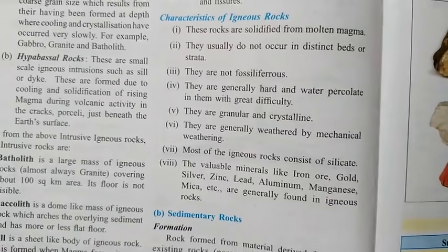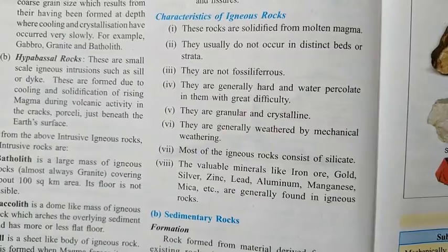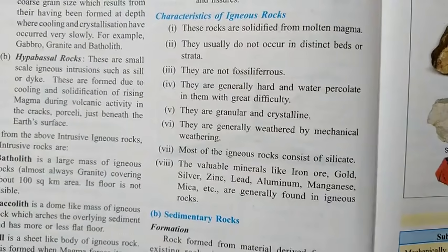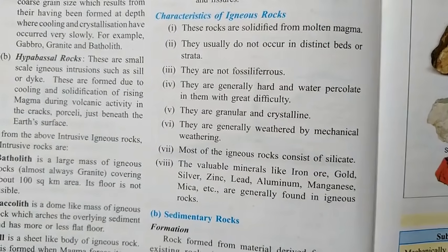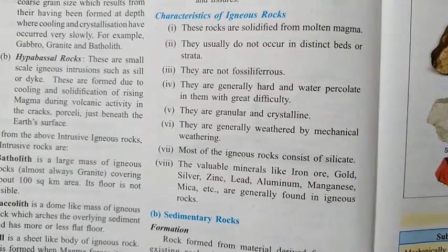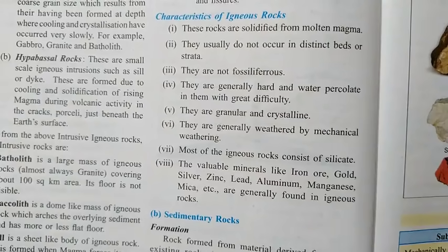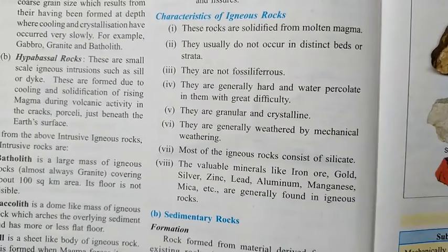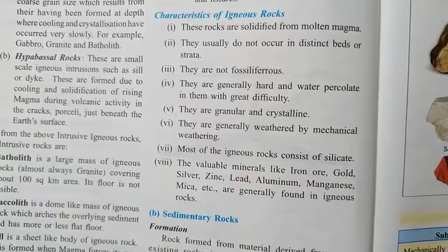Third, igneous rocks are not fossiliferous — fossils are not found in them. Fossils are the remains of very old animals, human beings, plants, or trees that are covered with layers of rock. We will study more about fossils when we discuss sedimentary rocks. Igneous rocks do not contain any fossils.